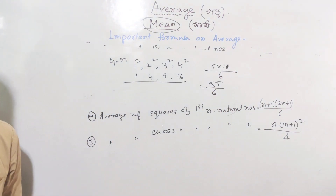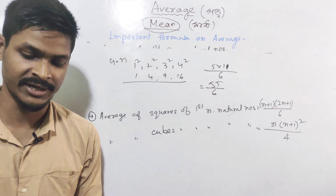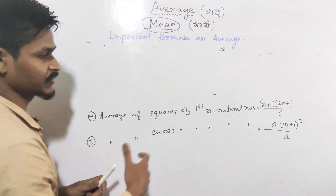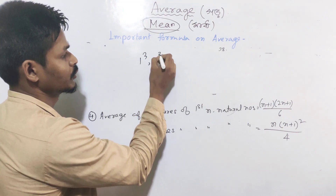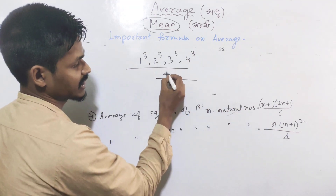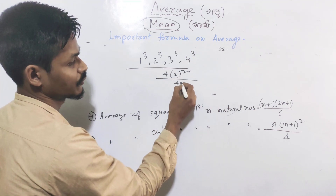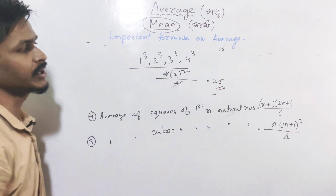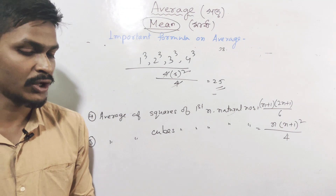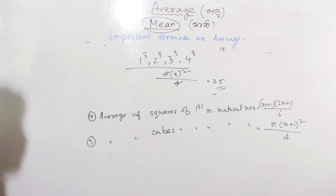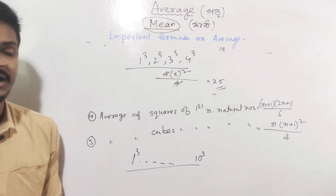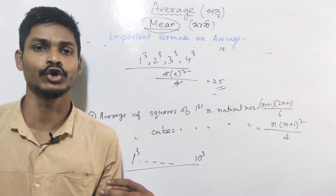For the average of cubes of first n natural numbers, the formula is n into n plus 1 whole squared divided by 4. For example: 1³, 2³, 3³, 4³ with n equals 4. Applying: 4 plus 1 is 5, 5 squared is 25, so 4 times 25 divided by 4 equals 25. So the answer is 25.